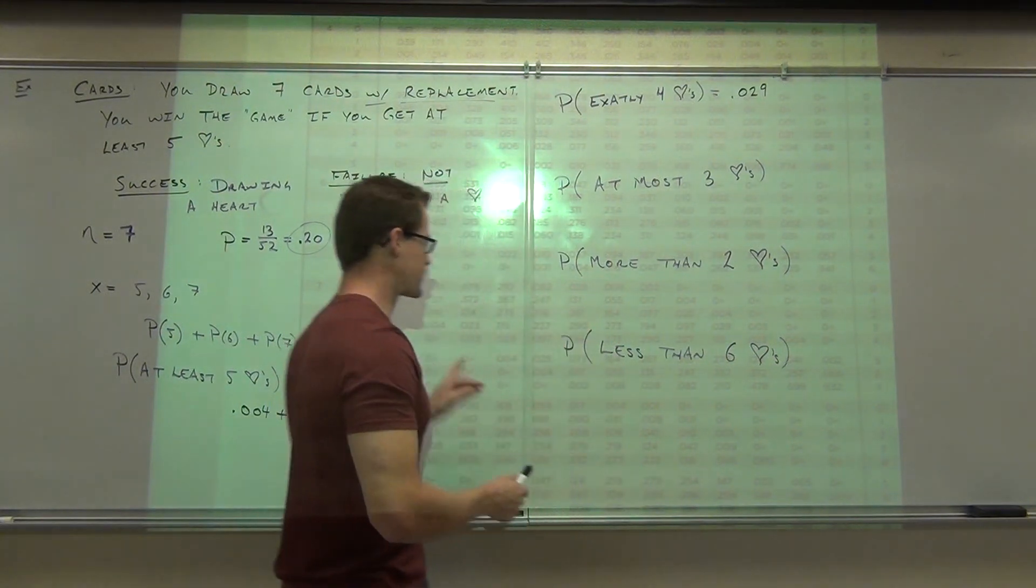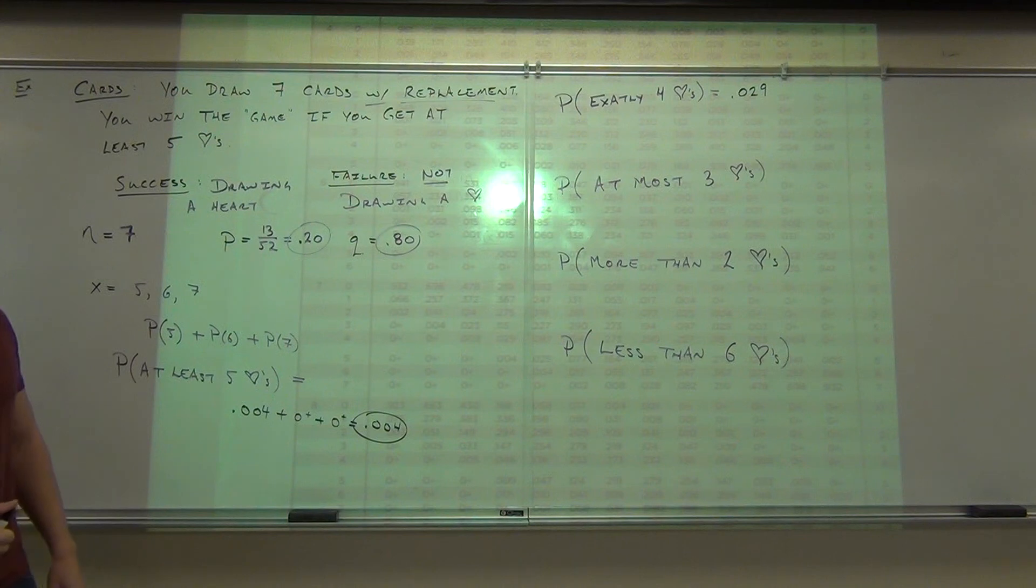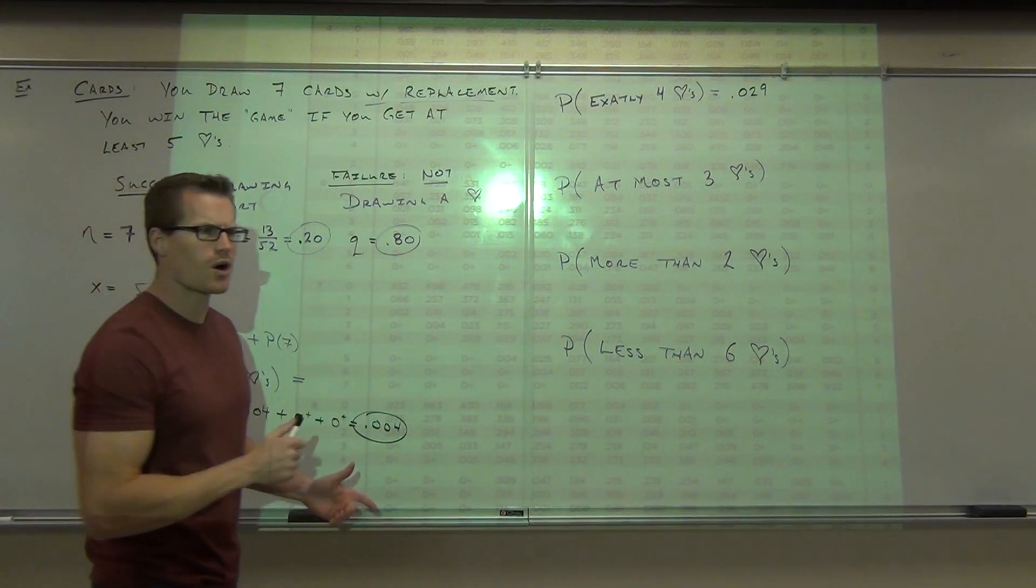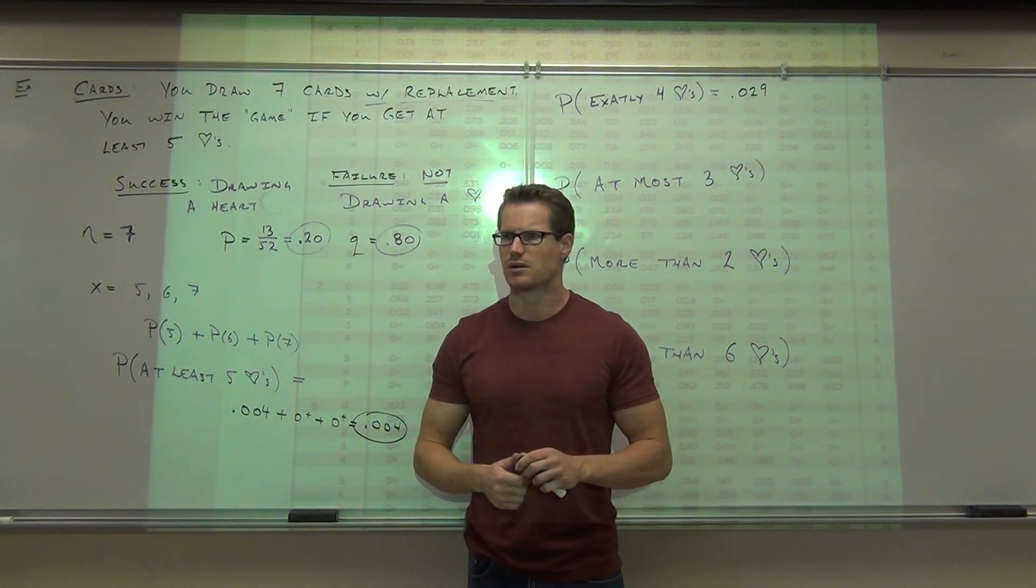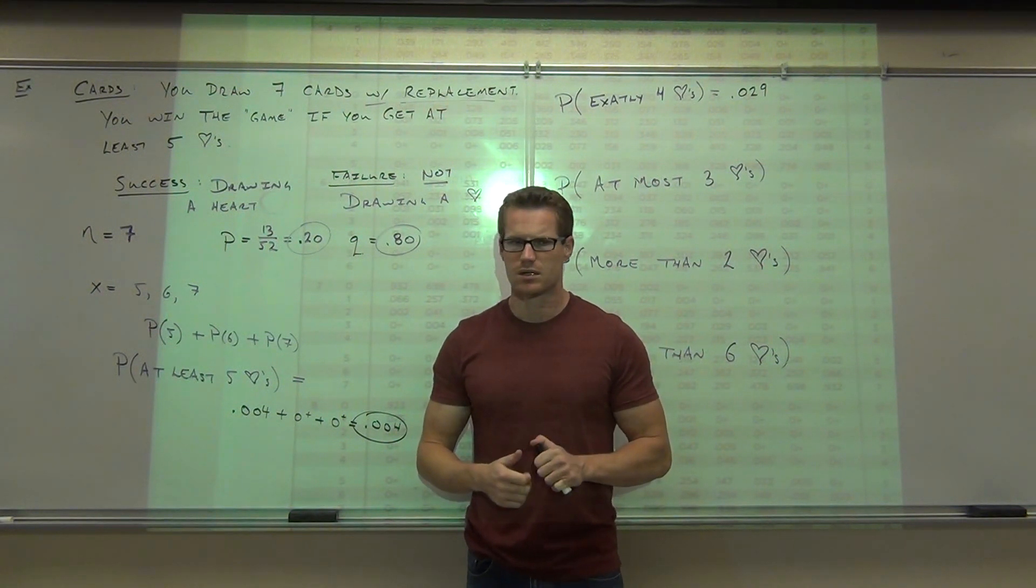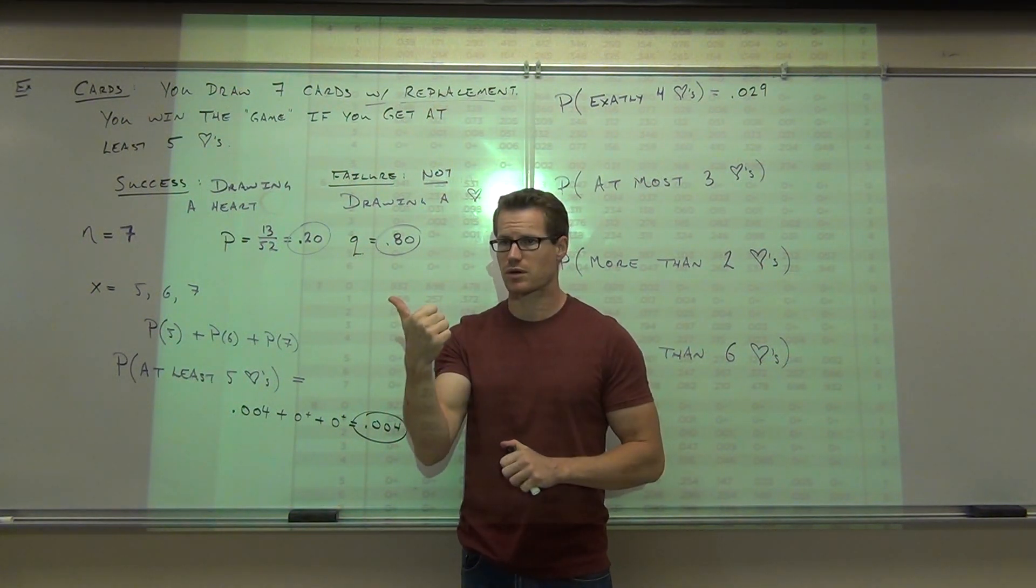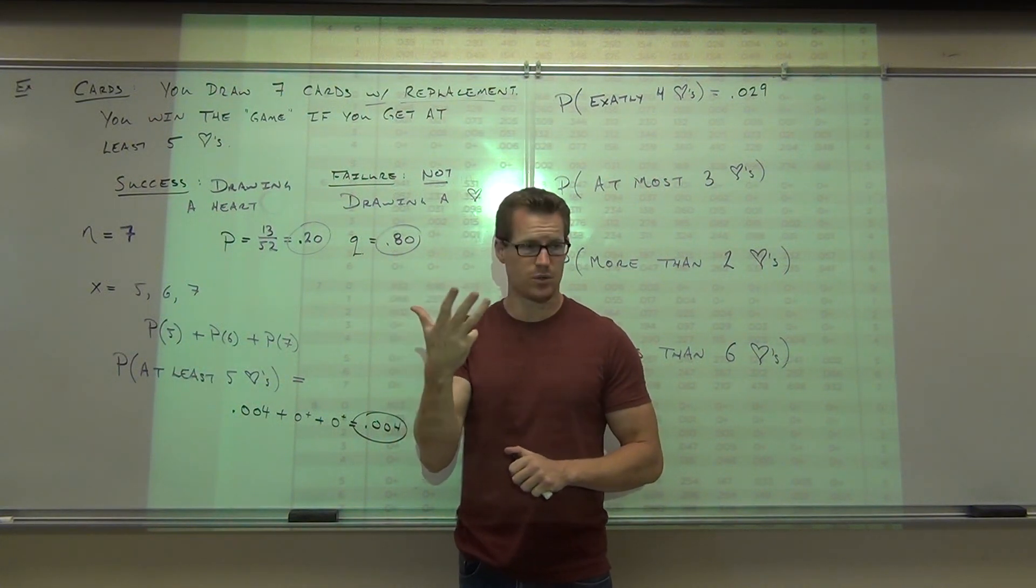Let's look at at most 3 hearts. At most 3 hearts. If you had at most 3, we already said that was, what's at most 3 again? 0. What else would work? 1. 1. 2. 3 is included.